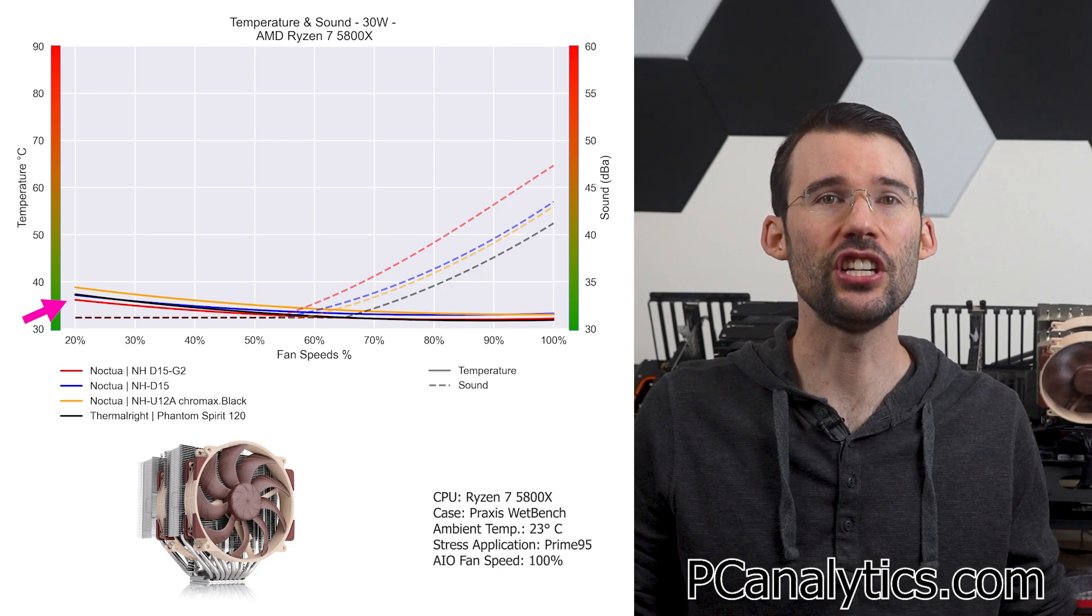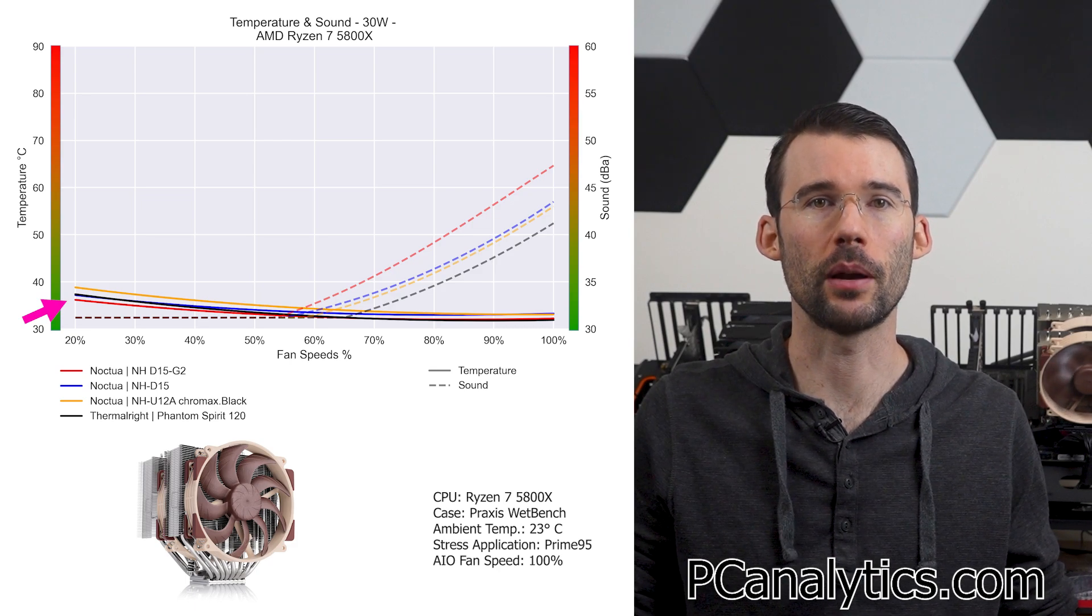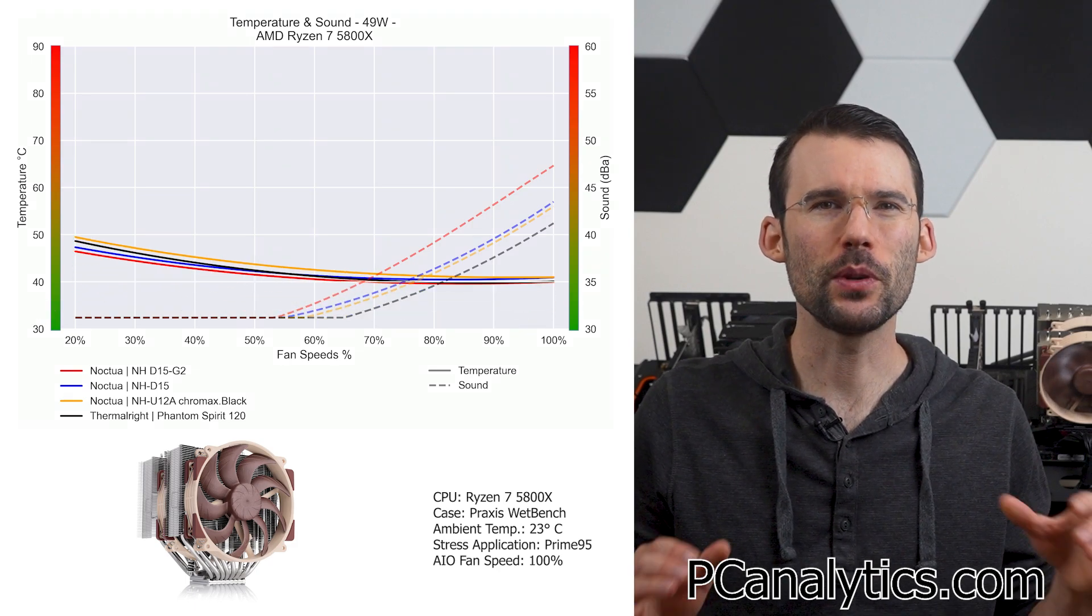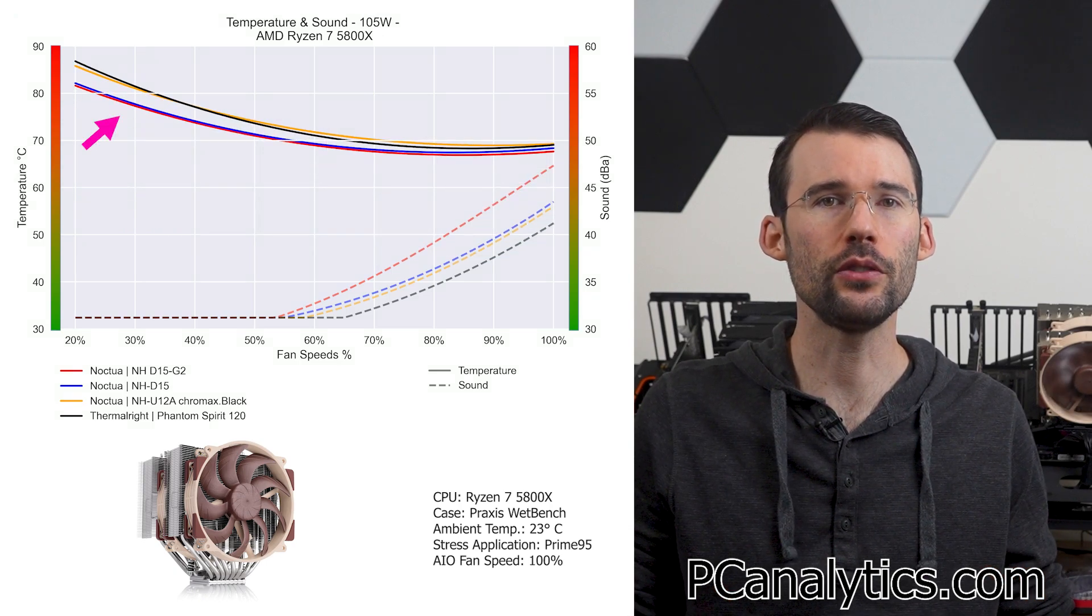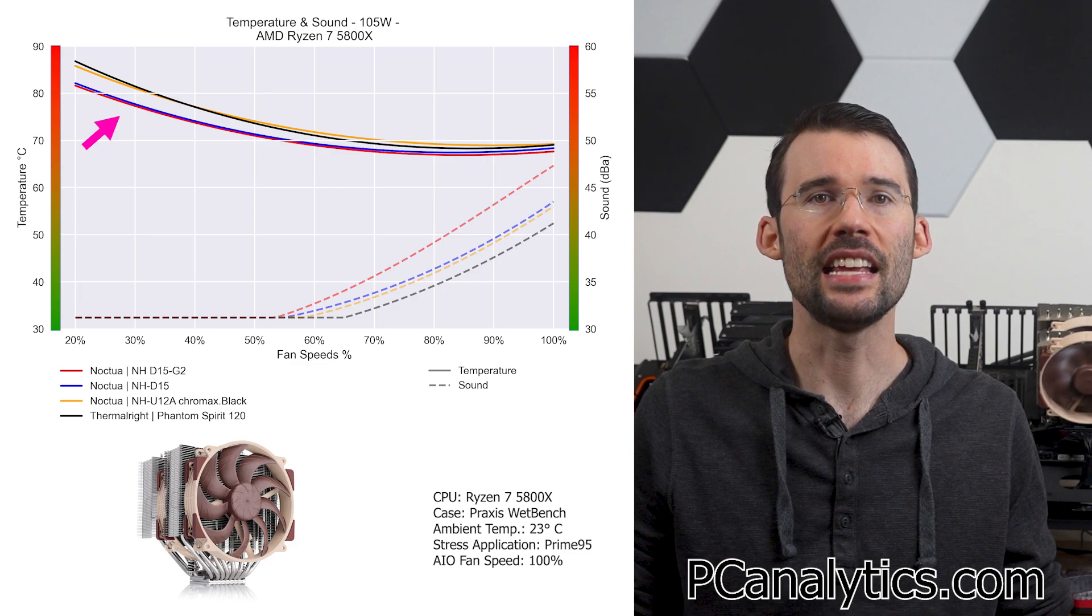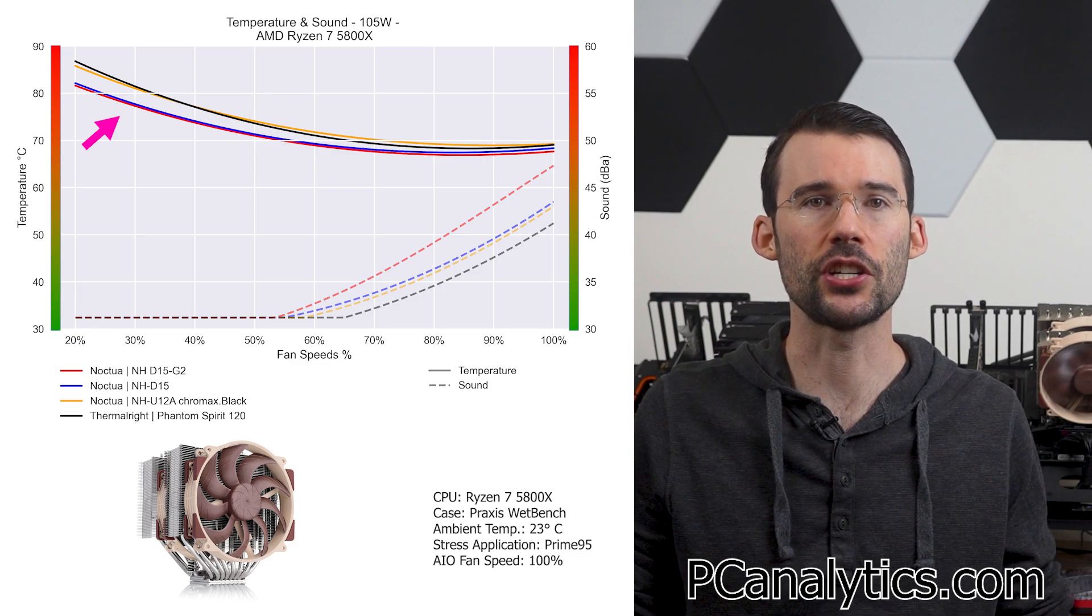At idle, the NH-D15G2 holds a slight lead at idle temperatures among all the coolers compared. As we increase the watts to 105, we can see that the Noctua NH-D15G2 continues to maintain one of the lowest temperatures, staying in line with the prior generation NH-D15.